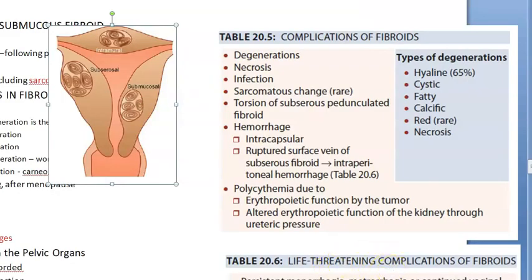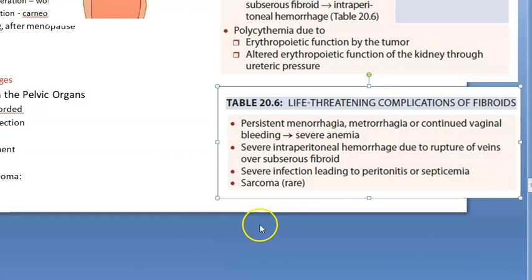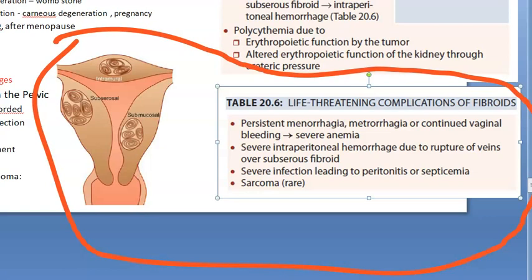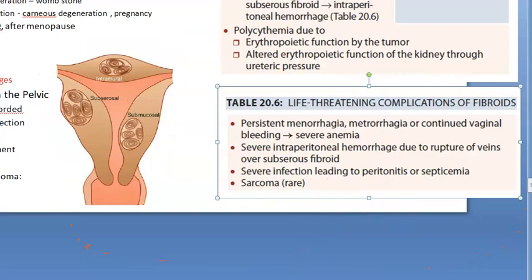Life-threatening complications of fibroid: severe anemia due to excessive bleeding. If there is rupture, intraperitoneal hemorrhage can occur. Severe infection can cause peritonitis and septicemia. Sarcomatous change (cancer) is another life-threatening complication. So: severe anemia, intraperitoneal hemorrhage, severe infection leading to septicemia, and sarcoma — these are the life-threatening complications of fibroids.